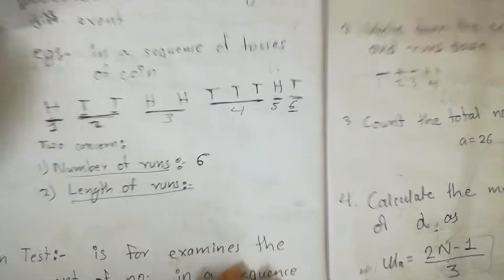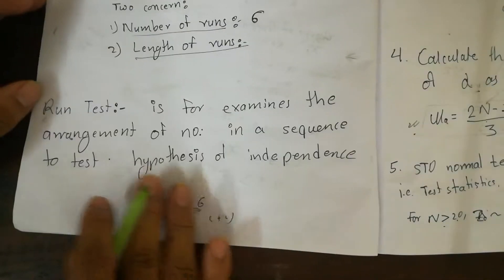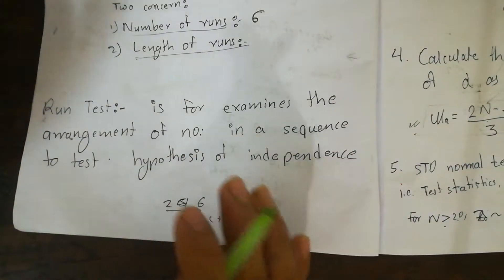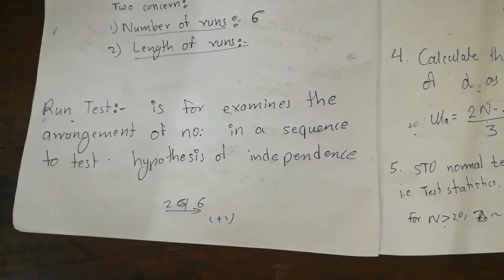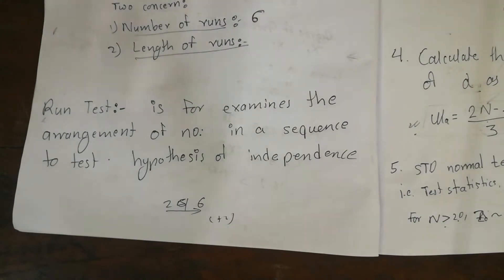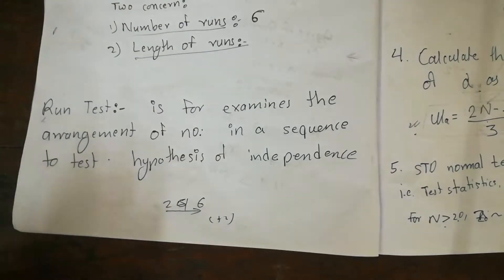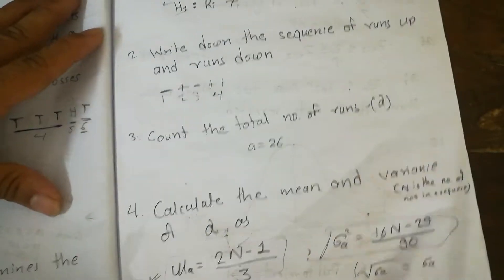Now, what is the run test? The run test is simply an examination of the arrangement of numbers in a sequence to test the hypothesis of independence — whether the data is dependent or independent with respect to the preceding value or the next value.